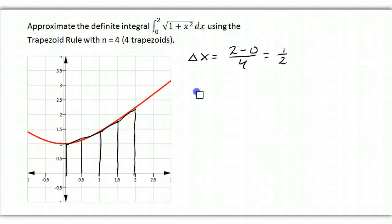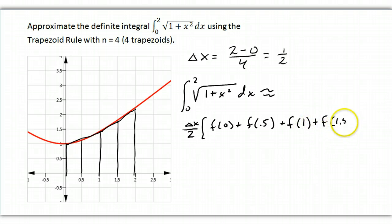Okay? So our area, or actually I should say the integral, right? Our integral from 0 to 2 of the square root of 1 plus X squared DX is going to be approximated by delta X over 2 times F of 0 plus twice F of 0.5 plus twice F of 1 plus twice F of 1.5 plus F of 2, and you remember what we do to all the middle ones, we multiply them by 2.